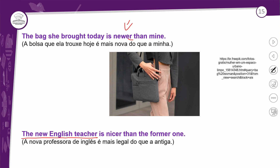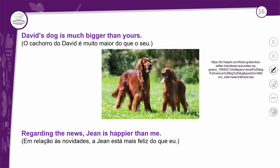'The new English teacher is nicer than the former one' — a nova professora de inglês é mais legal do que a antiga. O adjetivo é NICE, e como ele já termina em E, você só acrescenta o R naturalmente. NICE → NICER. E 'the former one' significa 'a/o antiga/o'.